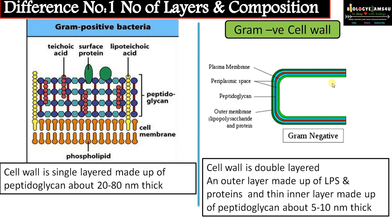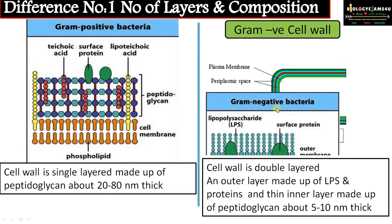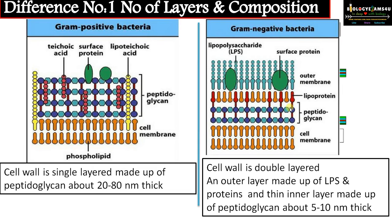Whereas in the case of gram negative bacteria, as you can see, on the outer side of the plasma membrane there is a thin layer of peptidoglycan wall. On the outside of the peptidoglycan wall there is an outer layer made up of lipopolysaccharide. So in gram negative bacteria the cell wall is double layered — an outer layer of lipopolysaccharide and, to the inside of that, a thin peptidoglycan layer.